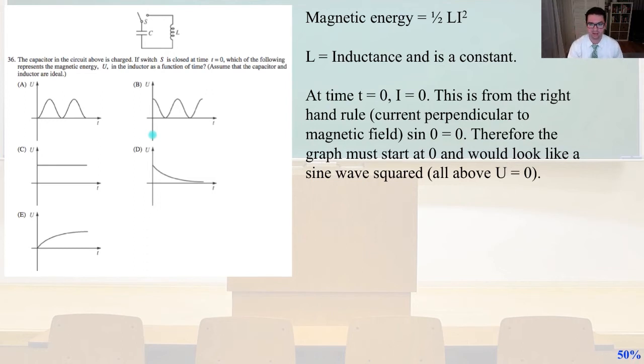So at time T equals 0, I equals 0, this is from the right-hand rule, the current perpendicular to the magnetic field sine 0 equals 0. Therefore, the graph must start at 0, and it has to look like a sine wave squared. So it's going to all be above U equals 0. So really, we could stop there and say that the answer is A. It must be a sine wave. It must start at 0. Therefore, answer A is our choice, number 36.